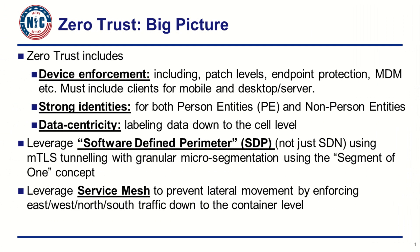The concept of SDP is based on mutual TLS tunneling with granular micro-segmentation, so you only get to see what you're supposed to have access to. By adding a service mesh on top of that, you're able to do that whitelisting all the way down to the container level, making it very granular. The service mesh is able to enforce east-west traffic as well — meaning container A talking to container B has to be whitelisted.